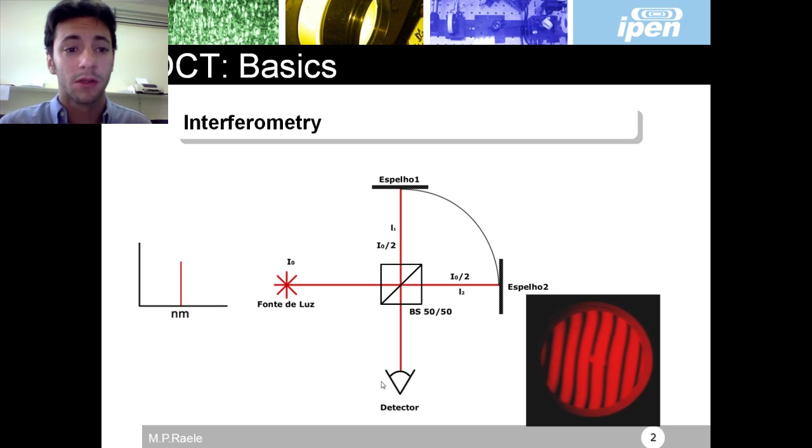But now if I change this light source for something that has a spectral distribution of, let's say, 50 nanometers, then my coherence length decreases from 300 meters to something like 7 microns.